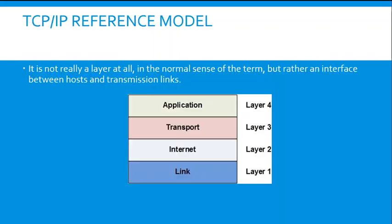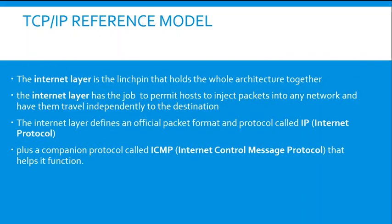The TCP/IP reference model is the old model. It is not a layer in the normal sense but is an interface between hosts and transmission links — the link pin that holds the whole architecture together. It permits hosts to inject packets into any network and have them travel independently to the destination. It defines an official packet format and protocol called IP, plus a companion protocol called ICMP — Internet Control Message Protocol — that helps in its function.